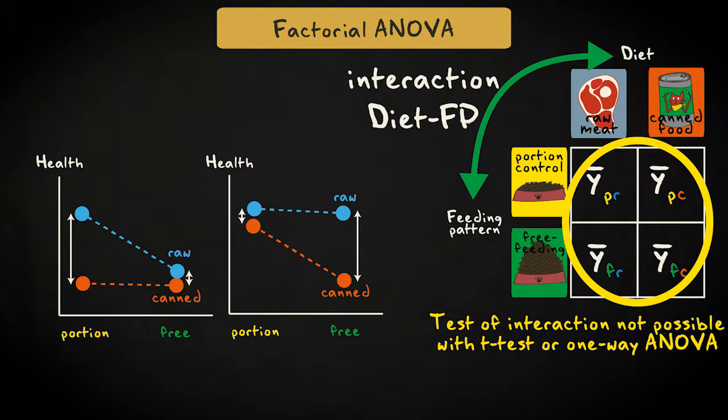Fully crossed factorial analysis of variance allows us to test for these interactions, which is not possible with separate t-tests or separate one-way analyses of variance.